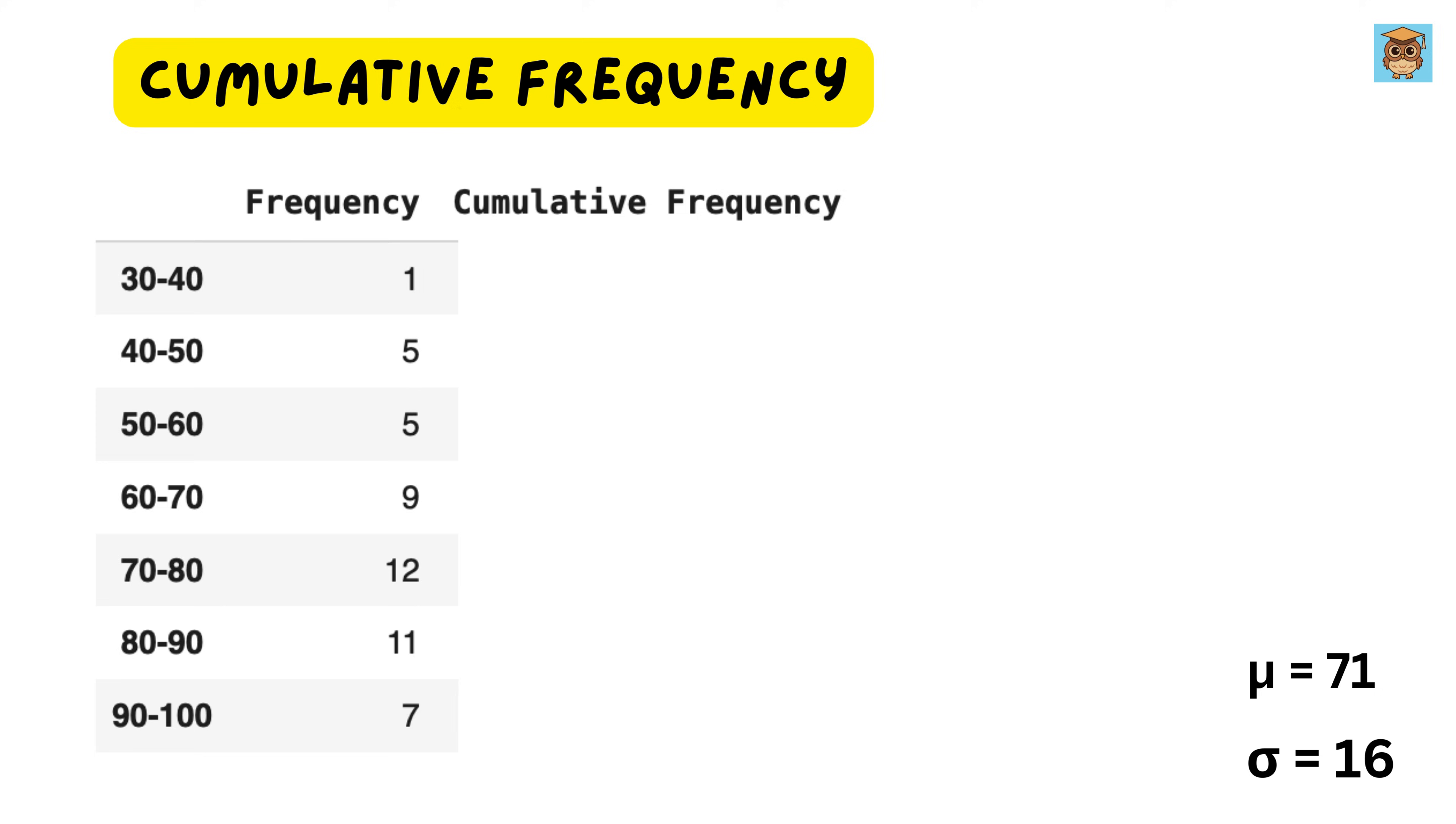Cumulative frequency tells us the running total of students who scored up to a certain range. Instead of just looking at how many students fall within a particular range, cumulative frequency tells us the total number of students who scored up to a certain mark. To calculate cumulative frequency, we start from the lowest range and keep adding up the students as we move higher. In our case, up to 40, we have one student. Up to 50, we add the next five students, making a total of six students. Up to 60, we add another five, making it 11 students. Up to 70, we add nine more, bringing the total to 20 students.